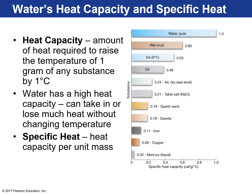Water has high heat capacity — that's why when you try to boil water for pasta, it takes forever. Heat capacity is the amount of heat required to raise the temperature of a substance one gram by one degree Celsius. Water has high heat capacity, meaning it can take in a lot of heat or lose much heat without a drastic change in temperature.